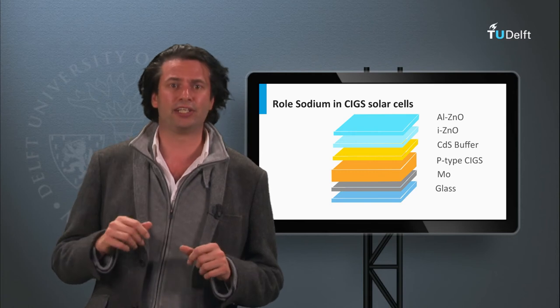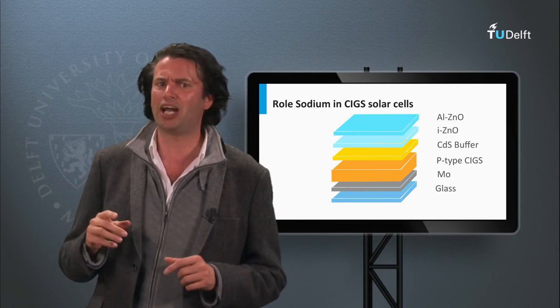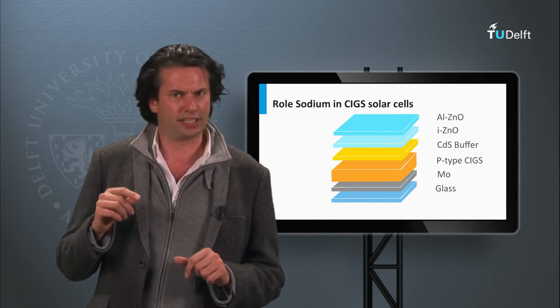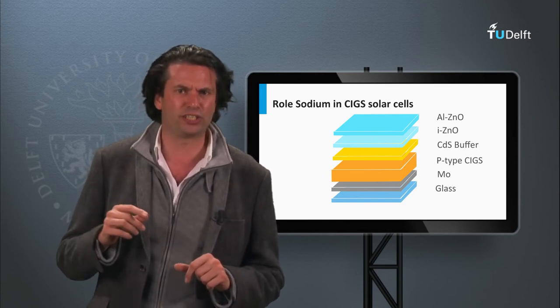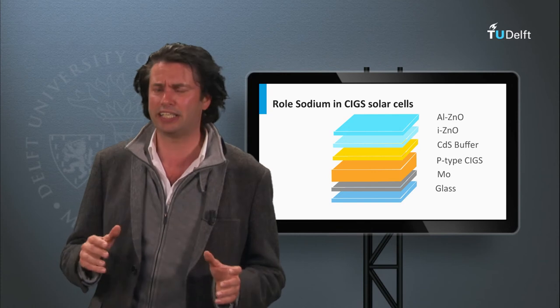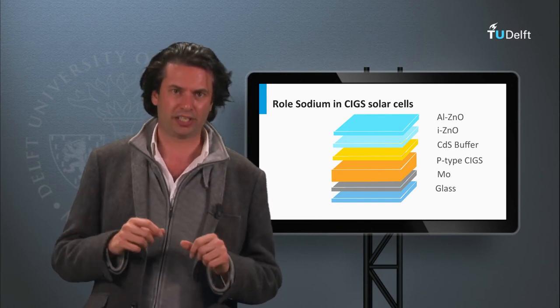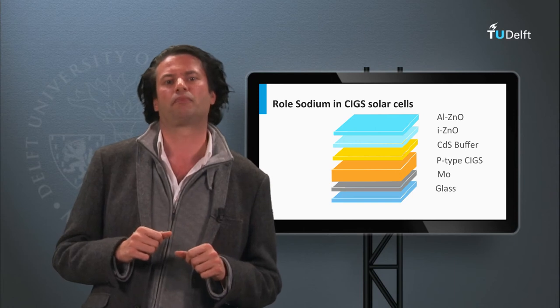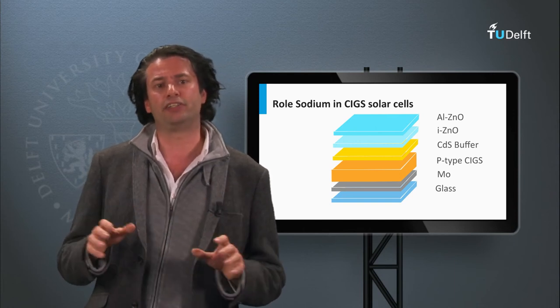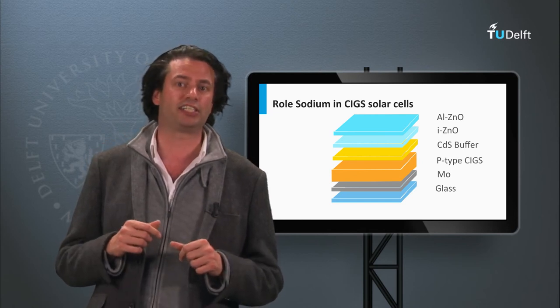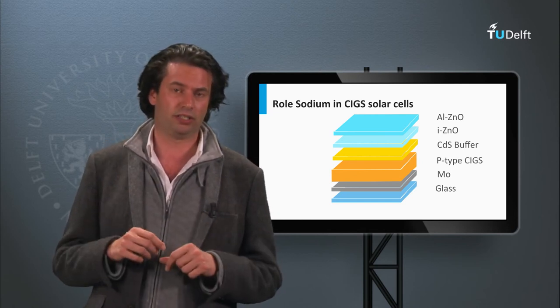The sodium source in the growth mechanism can be the soda-lime glass used as substrate. In CIGS solar cell concepts where the soda-lime glass is missing, the sodium has to be intentionally added during the deposition process. In the CIGS field, the exact reason why sodium improves several properties of the CIGS is still under debate.